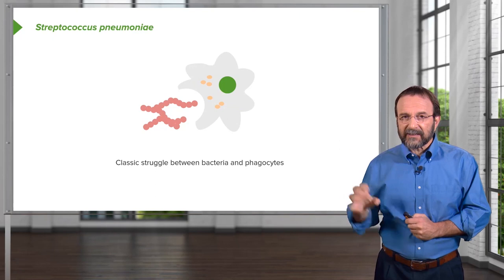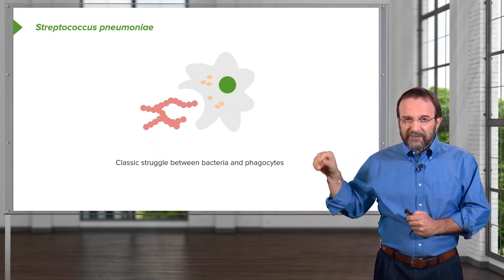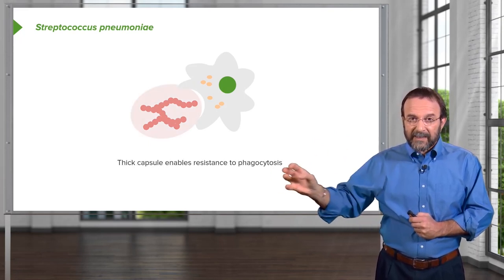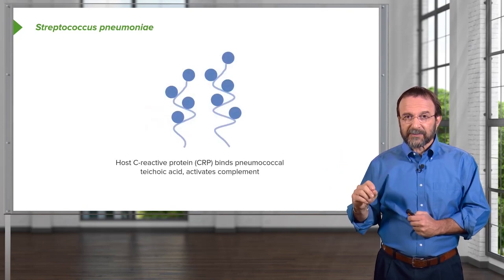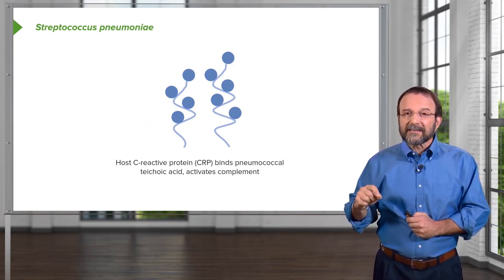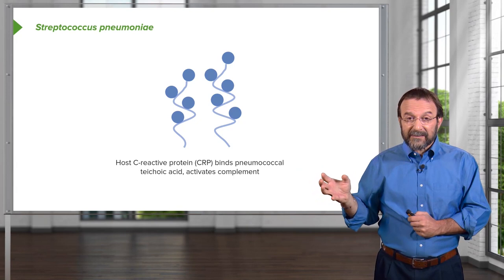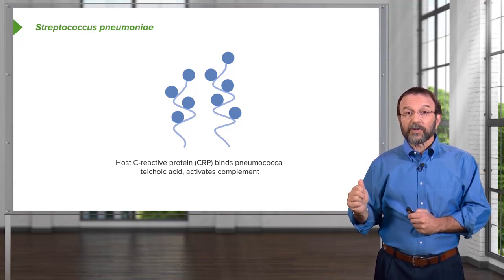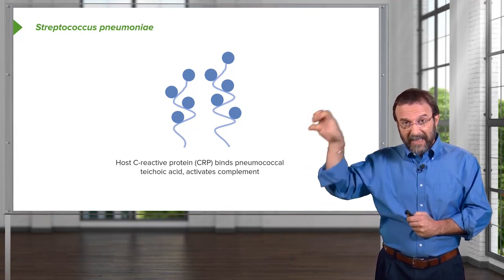The pneumococcus carries out a classic struggle with phagocytes. The bacteria have a thick capsule that makes them resistant to phagocytosis — it makes the bacteria bigger and has specific chemical interactions with macrophages. The host, however, has C-reactive protein (CRP), which binds teichoic acid in the outer peptidoglycan layer of the bacteria. This binding activates complement, a host defense system that can then lyse the bacteria.